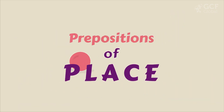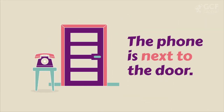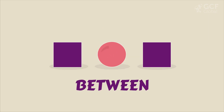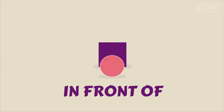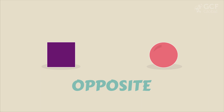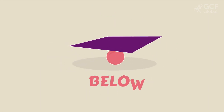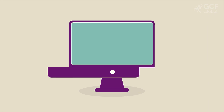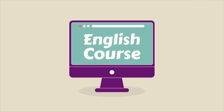A preposition of place indicates the place where an object or subject is placed. For example: 'The phone is next to the door.' Some prepositions of place are: between, behind, in front of, opposite, above, and below. To learn more about this and other themes of this language, visit our English course.